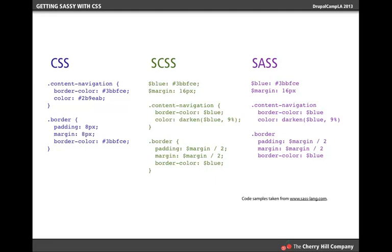Yes, there's more code written here, but it makes it so much easier. If you ever want to change the blue that you're using, for example, you just change it up where you declare the variable. You don't have to find that instance in all of your style sheets everywhere. Sass is basically the precursor to SCSS. It looks pretty similar to SCSS, but it's just using indentation to delineate what belongs to what, without the brackets and semicolons. The nice thing about SCSS is that a CSS style sheet is a valid SCSS sheet.